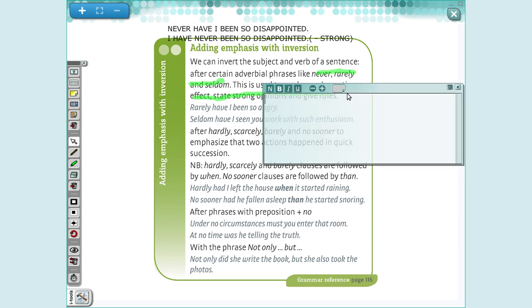This is used to produce a dramatic effect and strong opinions and give rules. So how are you going to write your sentence? This is important. We are going to use the adverb first: never, rarely, seldom. Then you are going to use the auxiliary verb or modal verb. Then you are going to use the subject. Then I have my verb.